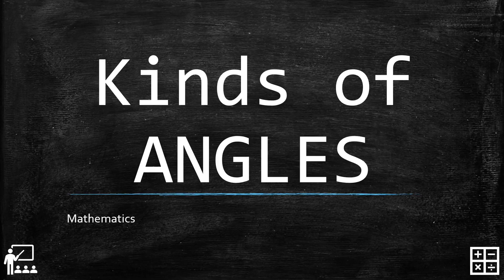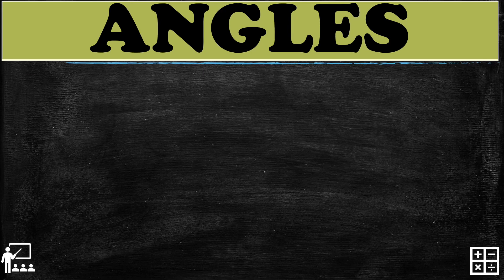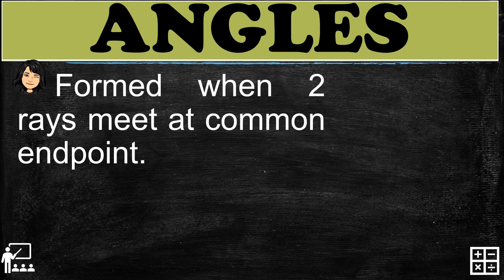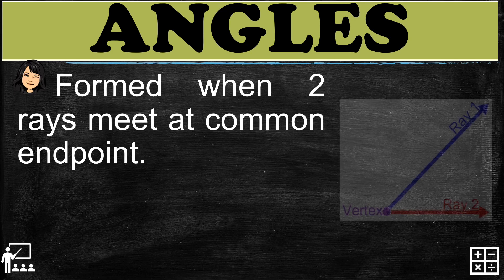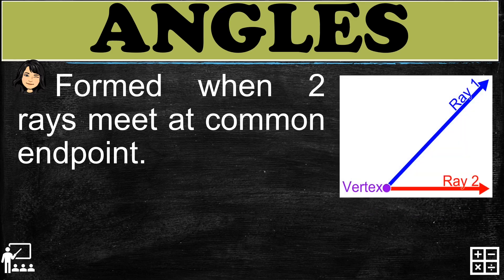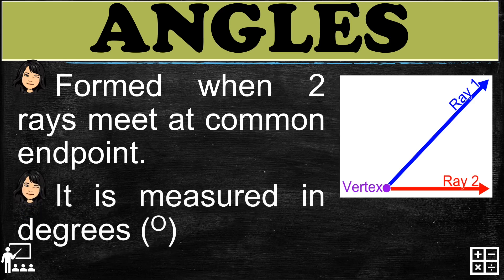This video lesson is about kinds of angles. Angles are formed when two rays meet at a common endpoint or vertex. As you can see on my figure, there are two rays combined together and meet at a common endpoint which is the vertex. Angles measure in degrees.